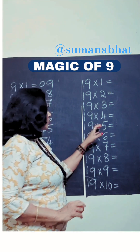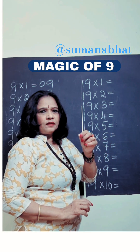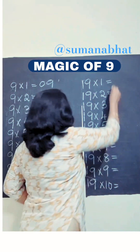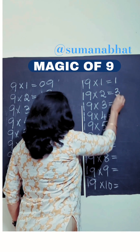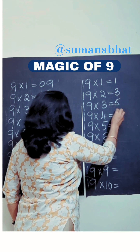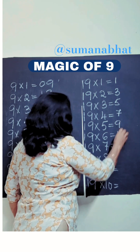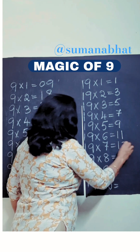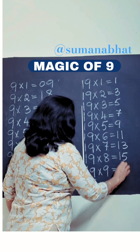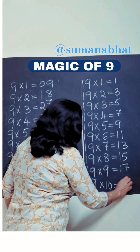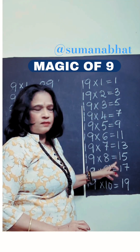To write the table of 19, here is what we should do. First, we have to write the odd numbers one after the other: 1, 3, 5, 7, 9, then 11, 13, 15, 17, and 19. We have written all the odd numbers.